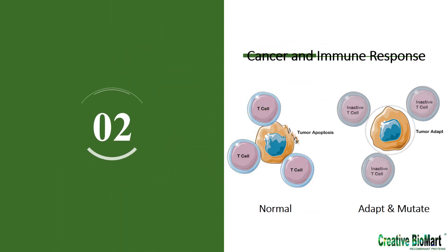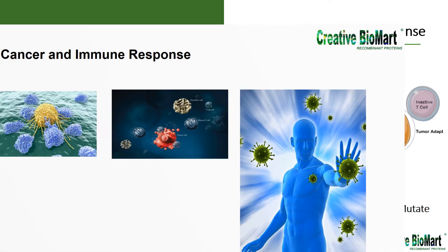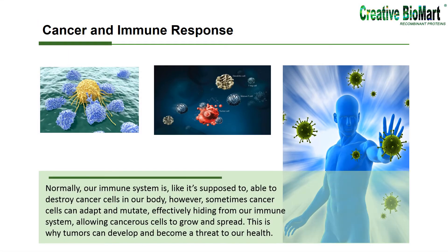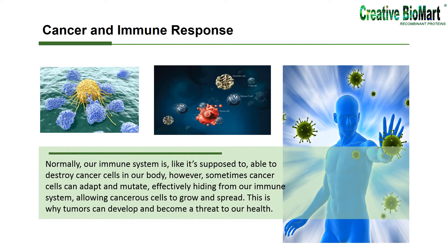Part 2: Cancer and Immune Response. Cancerous cells are actually quite common in the body. Normally, our immune system is able to destroy cancer cells in our body. However, sometimes cancer cells can adapt and mutate, effectively hiding from our immune system, allowing cancerous cells to grow and spread. This is why tumors can develop and become a threat to our health.